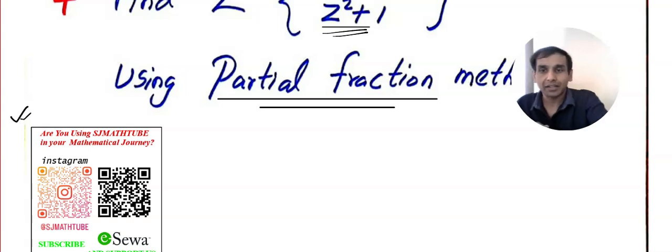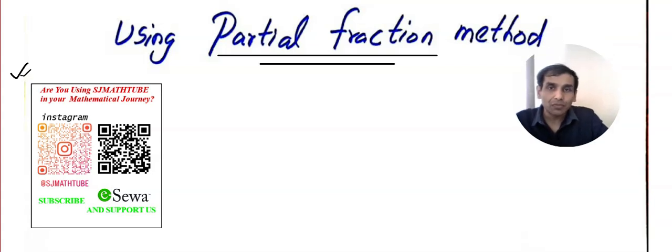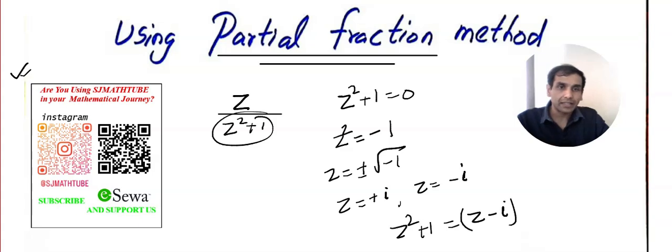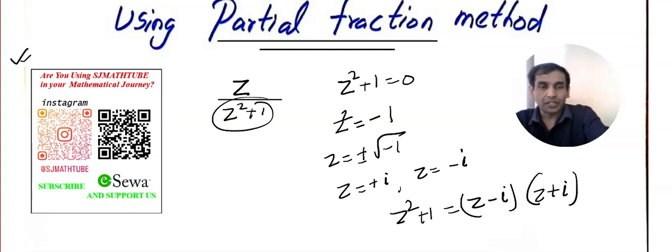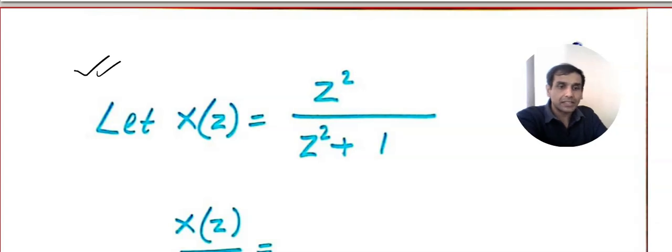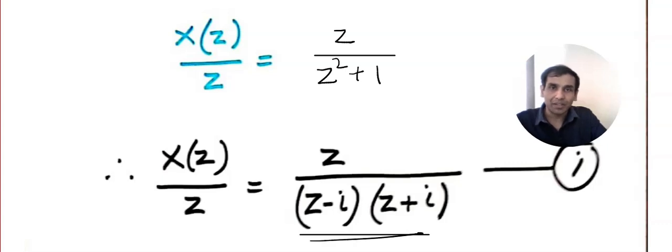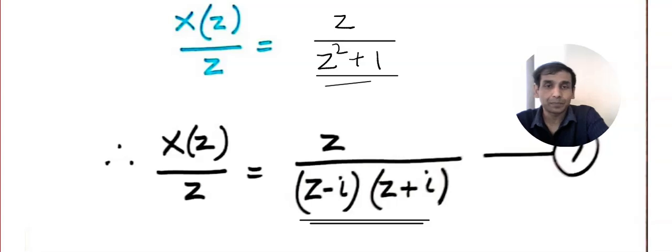By the way, subscribe to our channel and comment below and support us. Okay. So, we have z divided by z squared plus 1. So, I want to factorize this. So, I am going to equate it to 0. I am sure you know what to do. So, z will be plus minus root under minus 1. So, z equal to plus i, z equal to minus i. Now, I know that the denominator can be factorized into z minus i, z plus i. So, look at this. So, what I did is I am calling the given function as z by z squared plus 1. Now, what should I do? I did multiply both sides by 1 by z. And then, I am going to factorize the denominator. I already showed you the factorization.